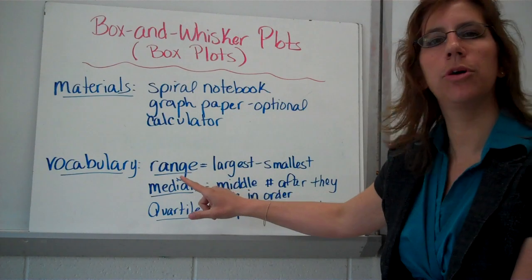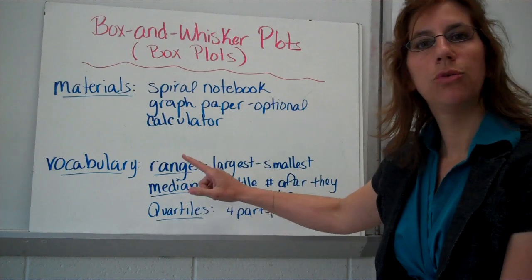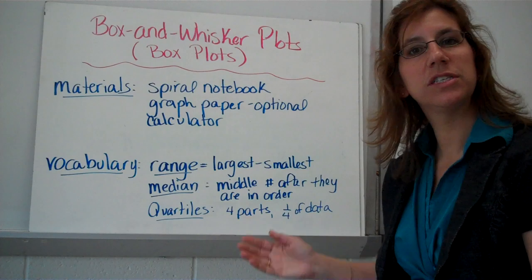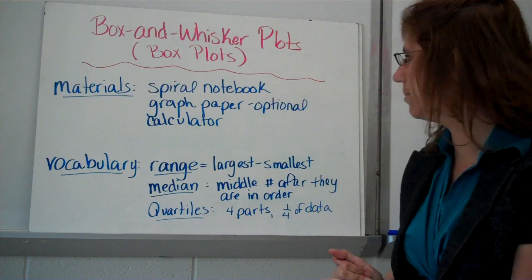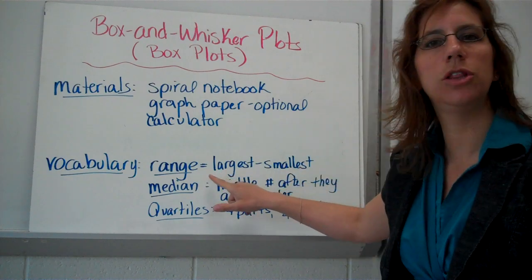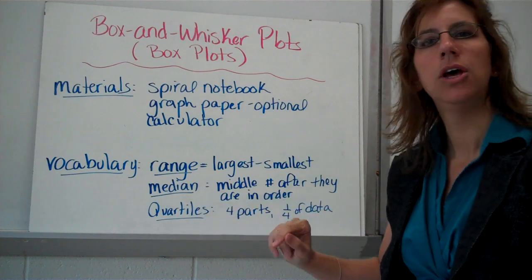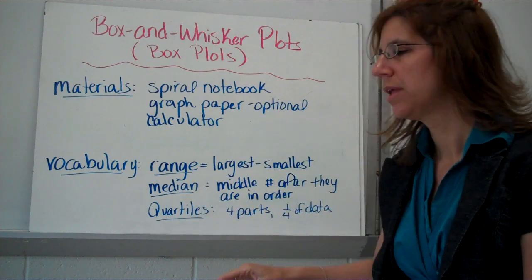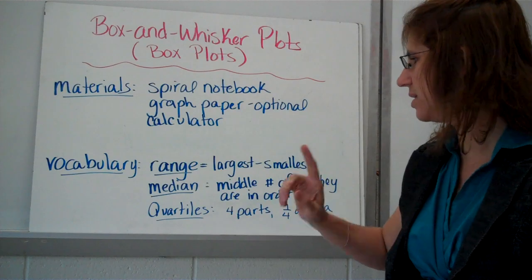And then you have vocabulary words. We've got range, median, and quartiles. Range, of course, is how big of a span the data falls across. So we've got the largest minus the smallest. We've got the median, which of course is the middle number. And make sure you put them in order. That's the key there.